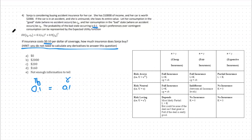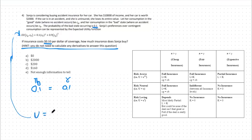As for our risk preferences, we can take a look at our expected utility function. Expected utility equals the probability of the bad state occurring times our utility in the bad state, plus the probability of the good state occurring times our utility in the good state. Seeing as both the CB squared and CG squared functions represent our utility, we can say with certainty that our utility function is utility equals consumption squared — we're just breaking this down into the bad state and the good state.